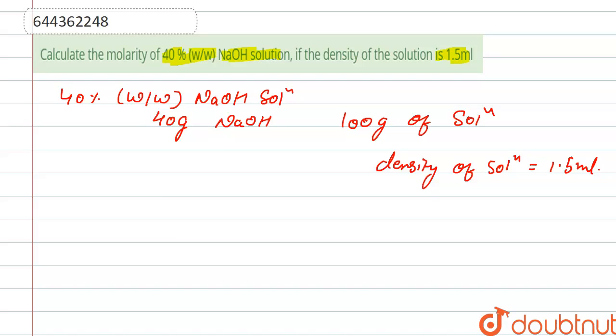So we calculate the volume of solution. Volume of solution can be calculated by mass upon density. So mass is 100 grams and density is 1.5 g/mL. This gives us the volume of solution.